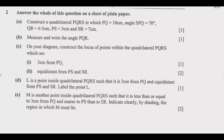Let us answer this question step by step. Question A is asking us to construct a quadrilateral PQRS in which PQ equals 10 centimeters. The first thing you need to do is make a rough draft on your plain paper before you start drawing, so you understand how it will look. PQ is 10 centimeters — the longest distance. Then QR is 6.5 centimeters, PS is 5 centimeters, and SR is 7 centimeters.